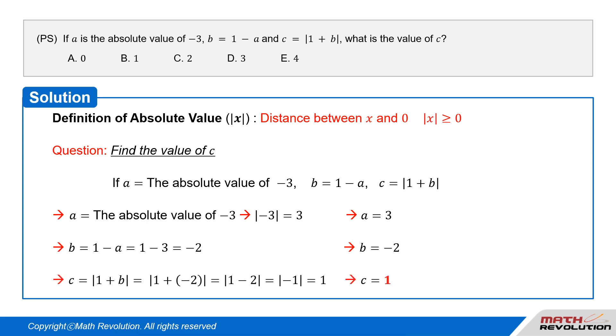Therefore, C equals the absolute value of 1 plus B, which equals the absolute value of 1 plus (-2), which equals the absolute value of -1, which equals 1. So B is the correct answer. Answer: B.